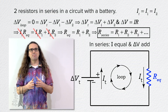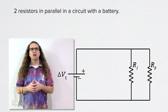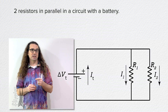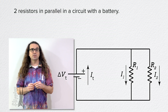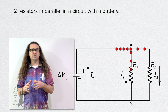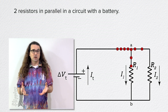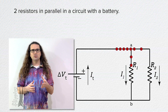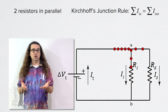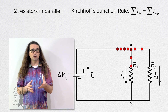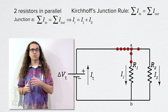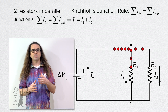Now let's do a circuit with a battery and two resistors in parallel. Again, the current directions are up through the battery and down through each of the resistors. There are two junctions in the circuit: junction A and junction B. Charge is conserved at a junction — every charge that goes into the junction must come out, which is what Kirchhoff's junction rule states. Using Kirchhoff's junction rule on junction A gives us: the terminal current through the battery equals the current through resistor 1 plus the current through resistor 2.